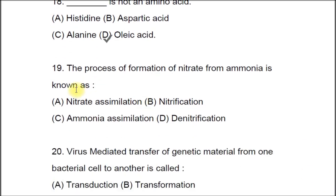Question 19: The process of formation of nitrate from ammonia is known as A) Nitrate Assimilation, B) Nitrification, C) Ammonia Assimilation, D) Nitrification. The correct answer is B, Nitrification.